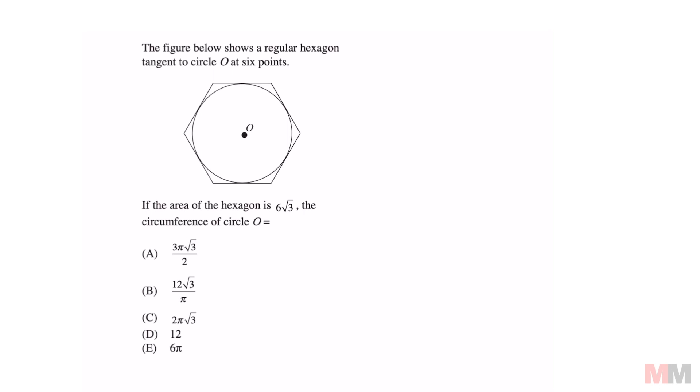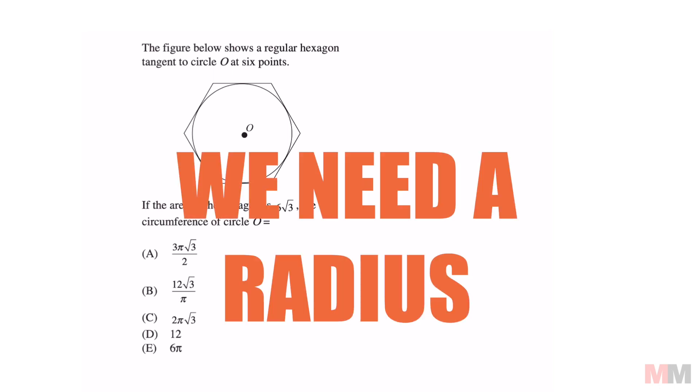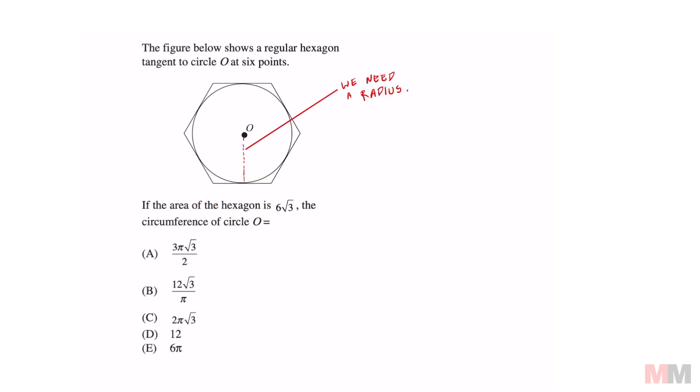To find the circumference of circle O, we're going to need this radius right here, and let me show you how to get that.